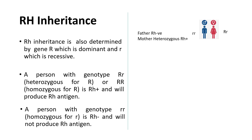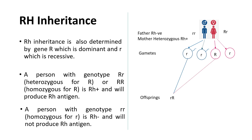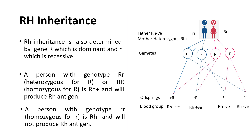Let us look at an Rh inheritance example. The father is Rh negative, meaning he is homozygous for small r. The mother is heterozygous Rh positive with genotype capital R small r. Gametes from the father all carry small r, while the mother's ova are of two types: one with capital R and one with small r. During reproduction, offspring could be capital R small r or small r small r. The probability of offspring having Rh positive blood group is 50% and Rh negative is 50%.